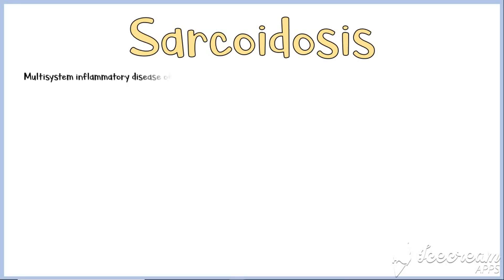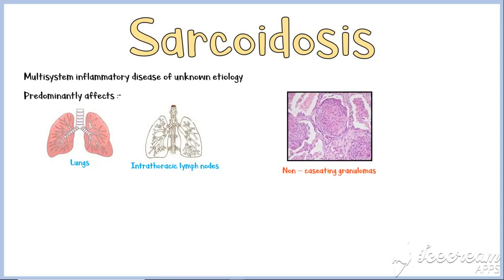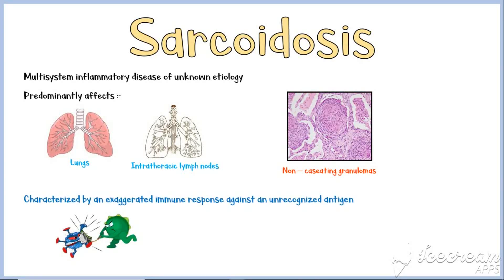Sarcoidosis is a multisystem inflammatory disease of unknown etiology that predominantly affects the lungs and intrathoracic lymph nodes. It is manifested by the presence of non-caseating granulomas in affected organ tissues, and is characterized by an exaggerated immune response against some kind of unrecognized antigen.